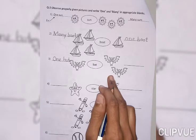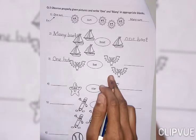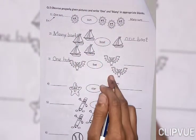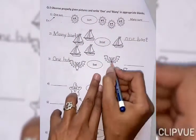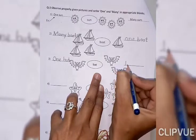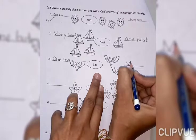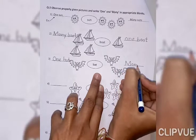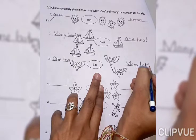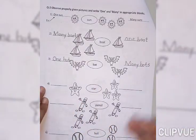जब एक से ज्यादा object होते हैं, एक से ज्यादा things होती हैं, तब उसी के पीछे के आता है? S और E-S आता है. Now, how many bats are here? Two bats are here. That's why we write here many bats. M-A-N-Y. B-A-T-S. Many bats.